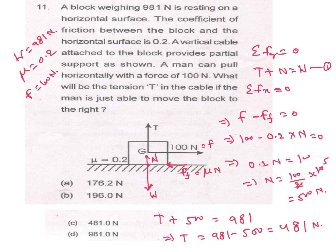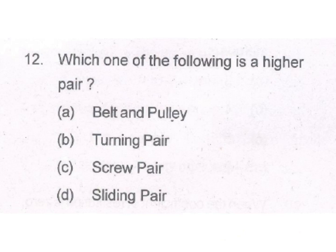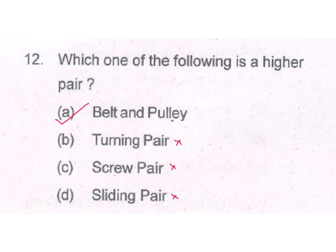Which one of the following is a higher pair? Turning pair — no. Screw pair — also no. Sliding pair — also no. Belt and pulley — this is the example of a higher pair, because one side is tight and one side is loose. Gear drive is also a higher pair. For a higher pair, there should be point contact or line contact.